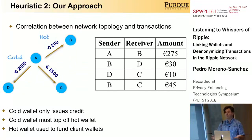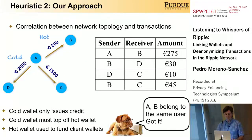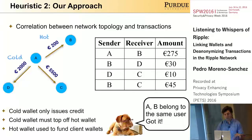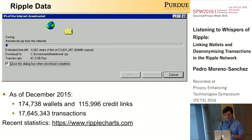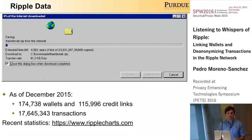Once we defined these two heuristics, our next step was to apply them to the real Ripple network. We downloaded the complete Ripple data as of December 2015: more than 170,000 wallets, more than 115 million credit links, and a bit more than 17 million transactions. If you are interested in more recent statistics, they are periodically updated at ripplecharts.com.